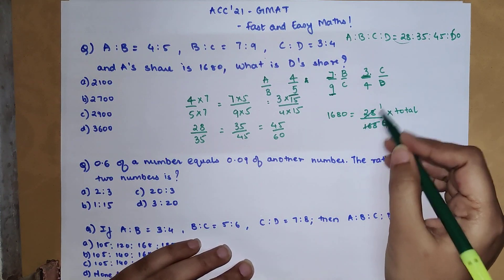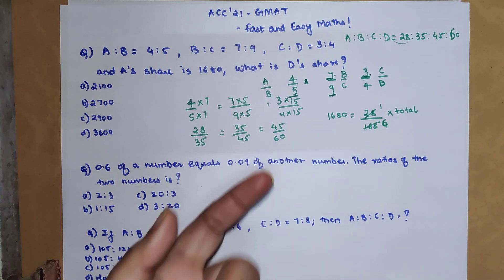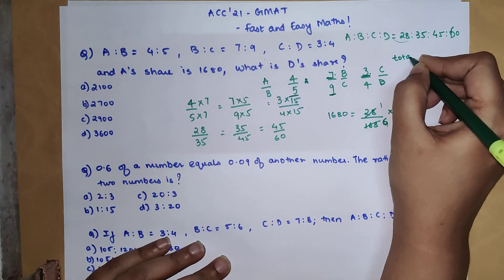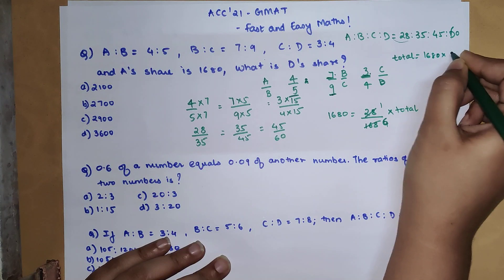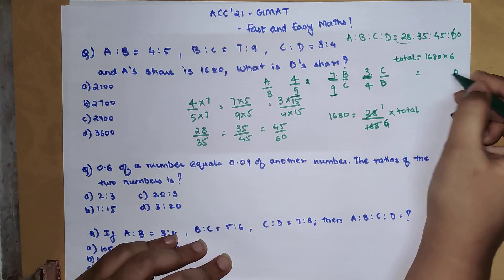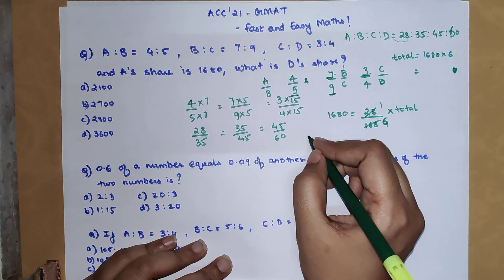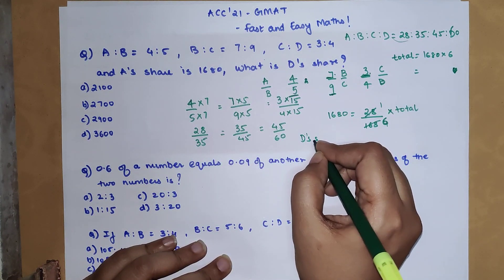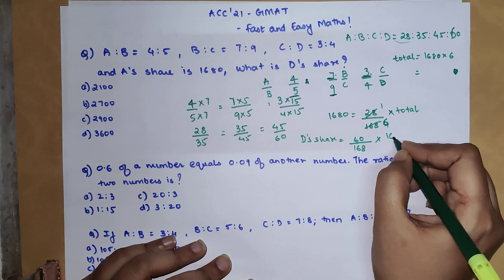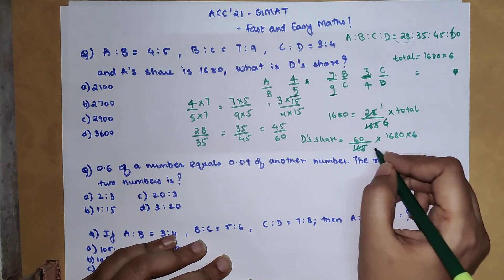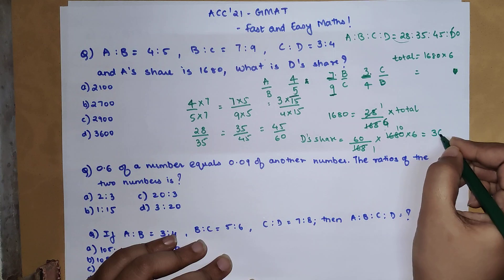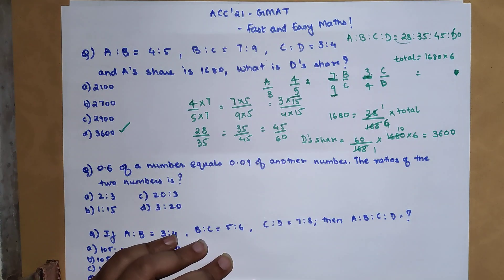You can simplify by cancelling — dividing by 4 or 2. So the total sum becomes 1680 into 6. You don't actually need the total for the final answer. D's share equals 60 upon 168 multiplied by the total, which is 1680 into 6. Since 1680 divided by 168 gives 10, and 6 into 60 is 360, multiplied by 10 gives 3600. So option D, which is 3600, is the correct answer.